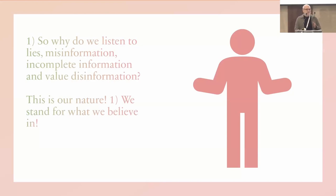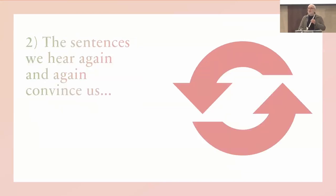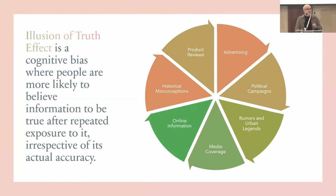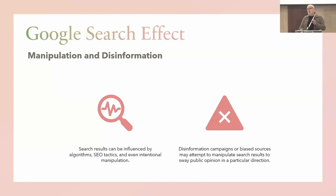This is our nature. We stand for what we believe in. The sentences we hear again and again convince us — this is the aha point. It's called the illusion of truth effect. It's a cognitive bias where people are more likely to believe information to be true after repeated exposure to it, irrespective of its actual accuracy. There is also the Google search effect.